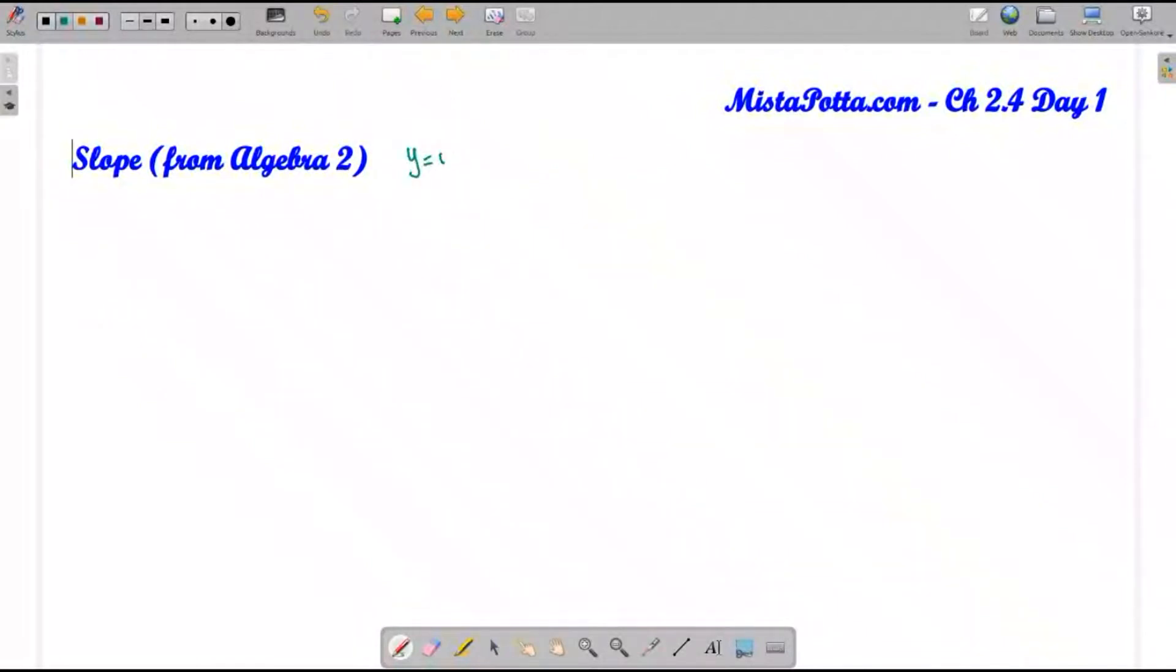When we went to Algebra 2 we started realizing that this y we're talking about is really some function of x, or some function of t. So when I say my slope is y2 minus y1 over x2 minus x1, what I'm really saying is that I have y of x2 minus y of x1 over x2 minus x1, or y of t2 minus y of t1 over t2 minus t1. In other words, I've got the change in my dependent variable where I substitute in my two domain points divided by the change in my independent variable.